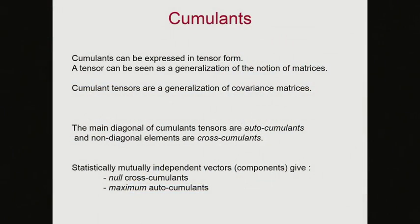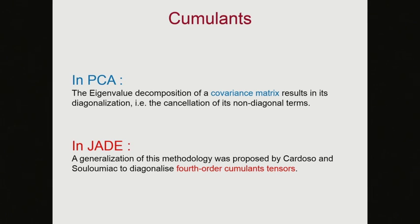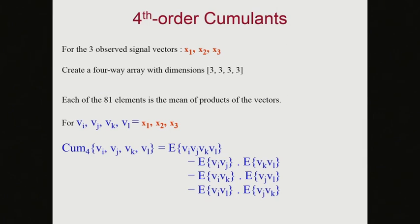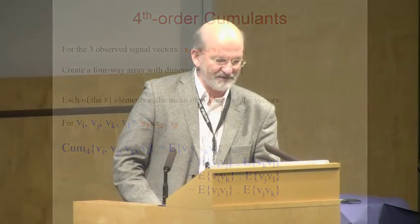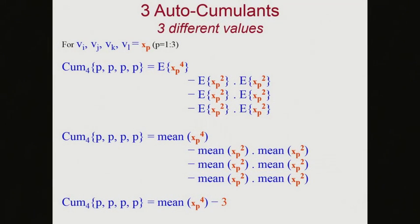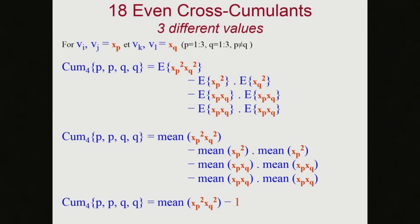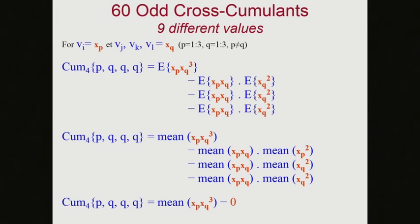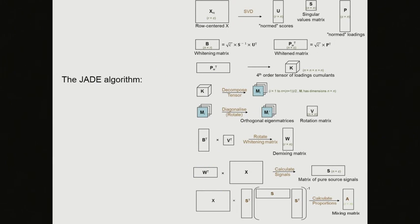What's nice is the similarity to PCA: you diagonalise the cube of cumulants. The cross-cumulant between two different signals is driven toward zero while you maximise the cumulant between a signal and itself. PCA is eigenvalue decomposition of a covariance matrix; ICA with the JADE method is diagonalisation of a fourth-order cumulants tensor. With three observed signals you have three auto-cumulants, plus even and odd cross-cumulants.